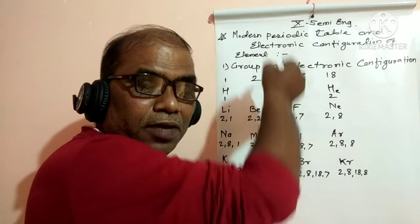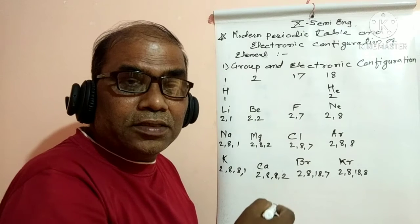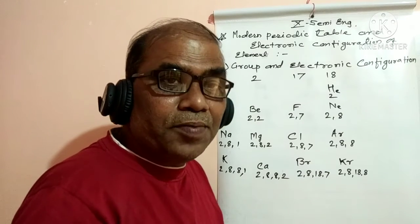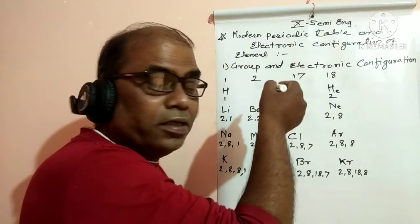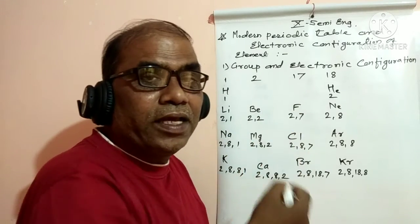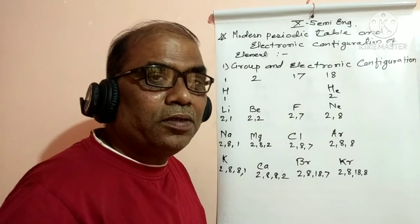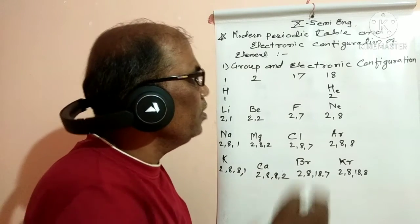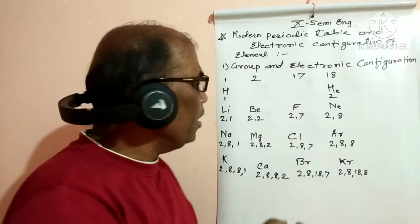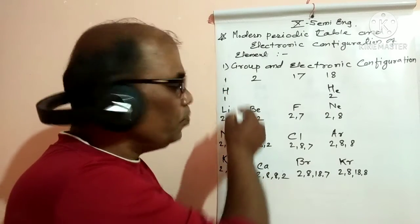The characteristic of elements in the same group is that their outer shell electronic configuration is the same. This outer shell electronic configuration determines the group of an element. Elements in different periods but in the same group share the same number of valence electrons.